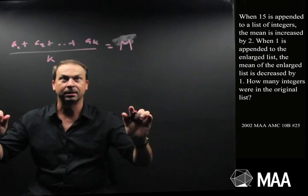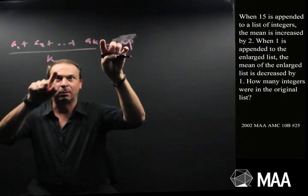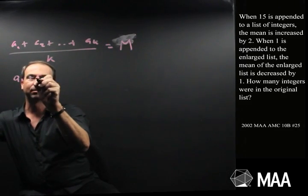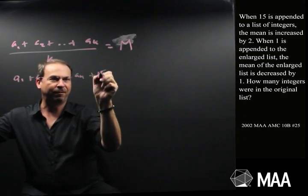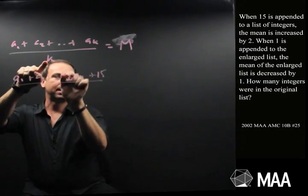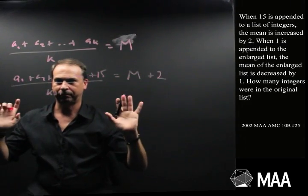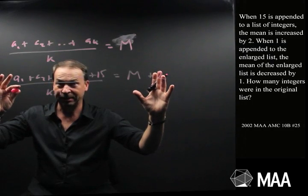And the question says, in the first sentence, if I add 15 to the list, we get one more integer, the mean goes up by 2. So that says a1 plus a2, up to ak, plus the number 15, divided by k plus 1 integers, is the mean I had before, up by 2. So I've made this a very algebra statement now. That's the first sentence.